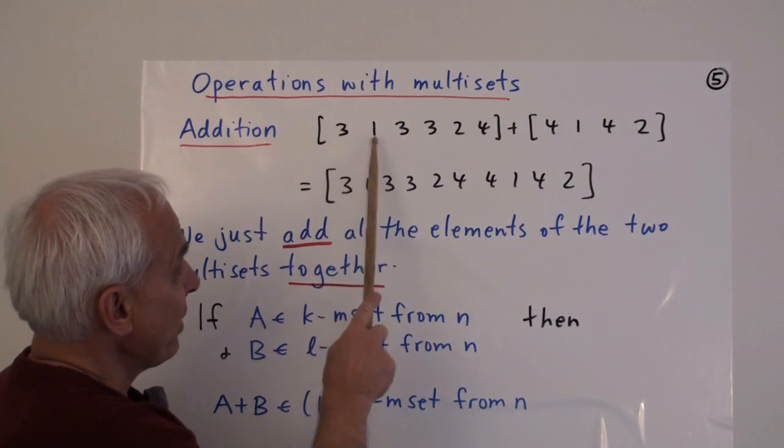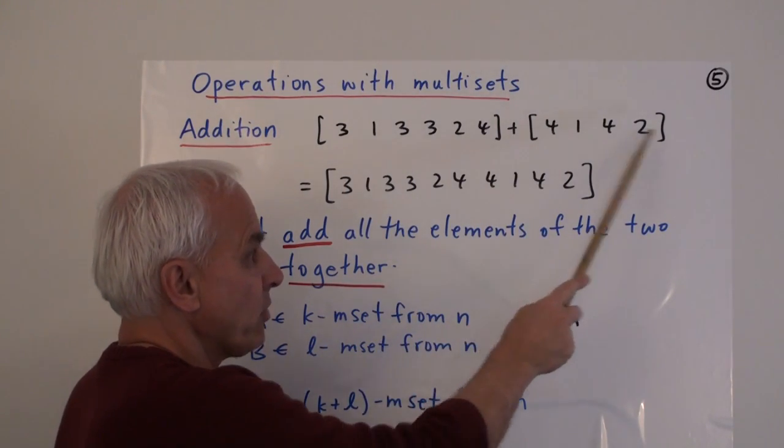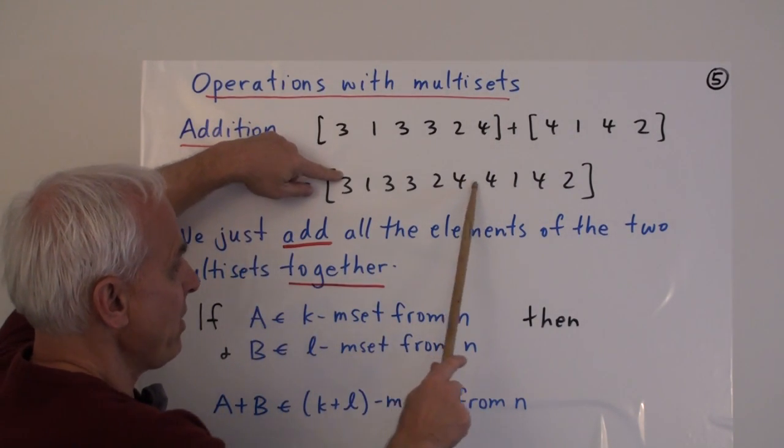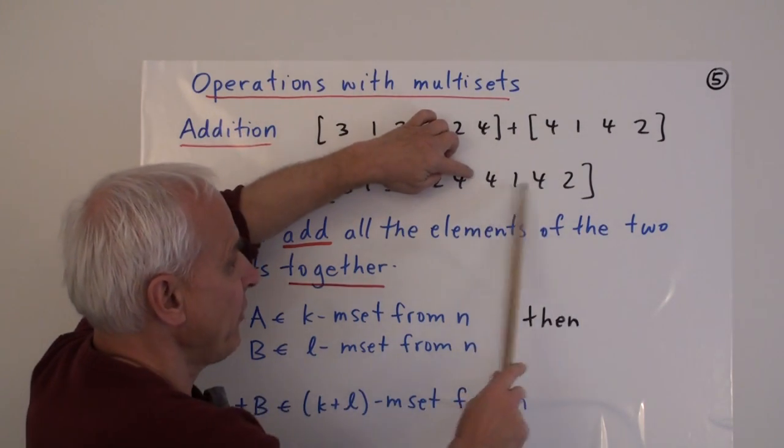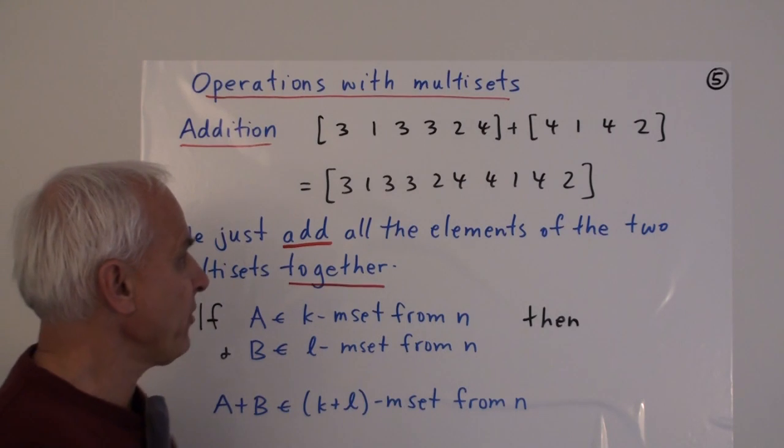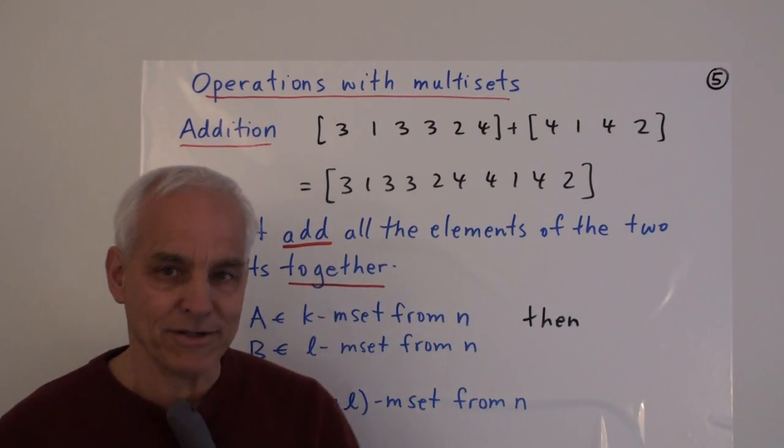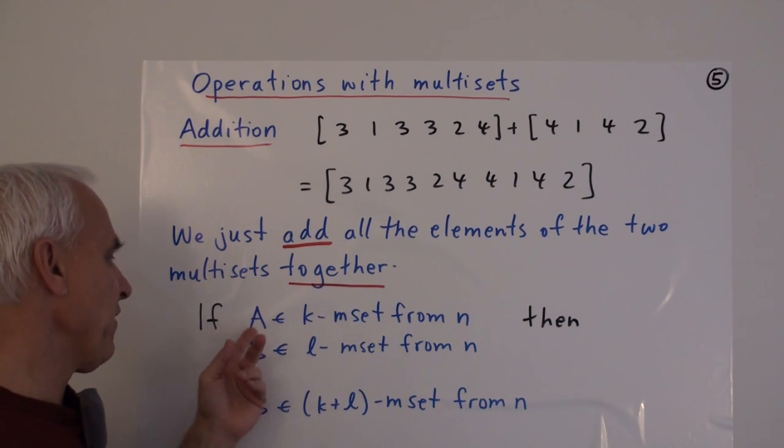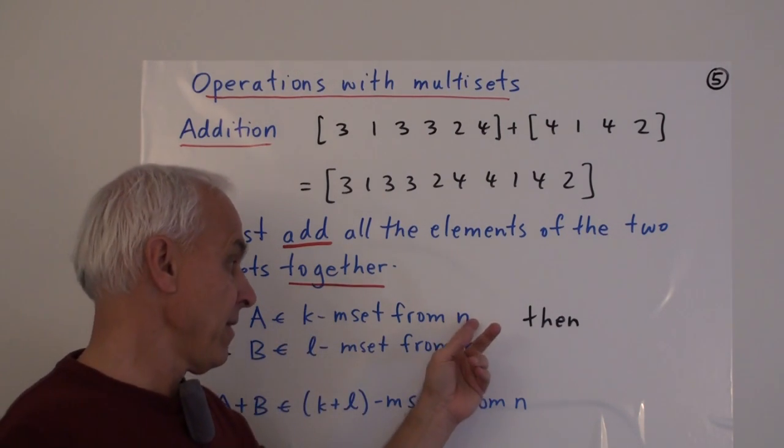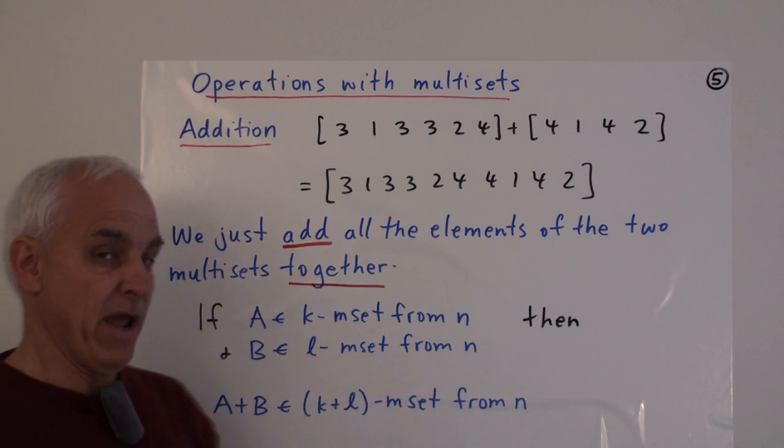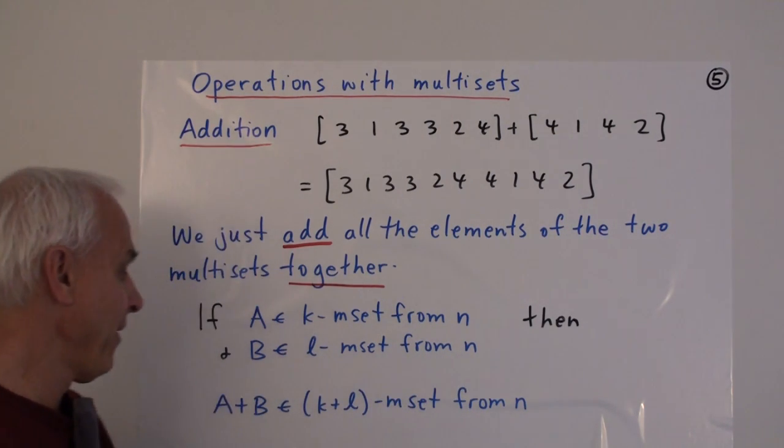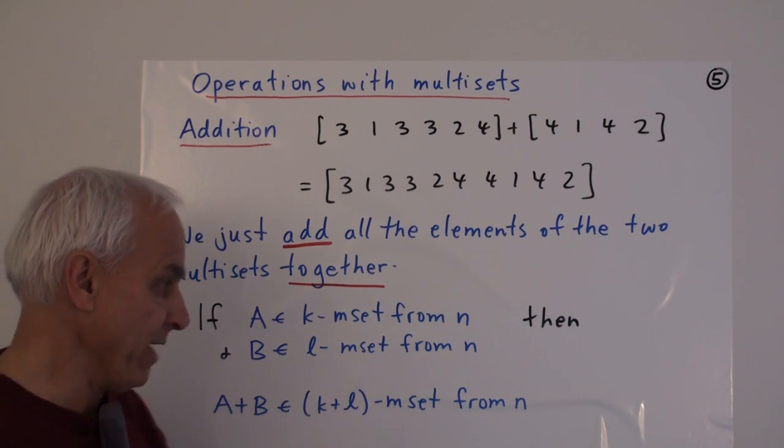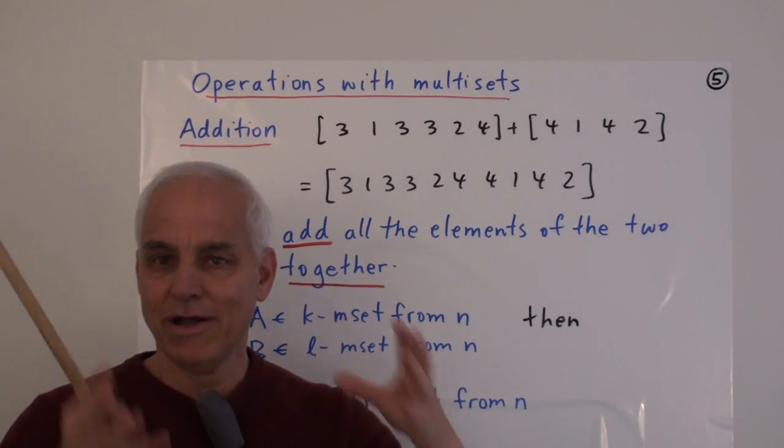And physically, it corresponds to just about the simplest thing that you can imagine. You have one box full of coins. You have another box full of coins. You just put them both in another box. You just empty out all the elements of both into a third box. And that's called the sum of the two boxes. So, for example, the multiset [3,1,3,3,2,4] plus the multiset [4,1,4,2]. To get the sum, you just combine all of the elements. So, we can do that just by listing the elements of the first one up to there, and then just tacking on the elements of the second. Repetitions don't bother us because repetitions are allowed in our multiset. So, we just add all the elements of the two multisets together. And pretty clearly, if A is a k-Mset from n and B is an l-Mset from n, then when we combine them, we're going to get a k plus l Mset from n.